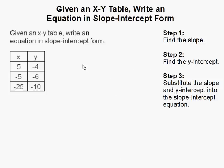Given an x-y table, write an equation in slope-intercept form. The table of values that's given, each row is going to represent a point.